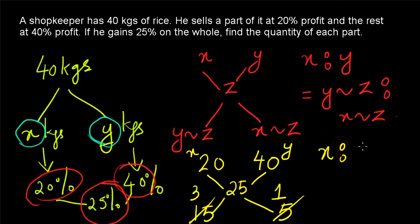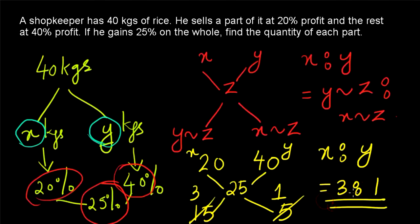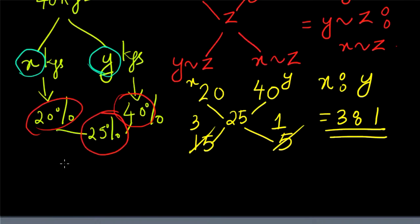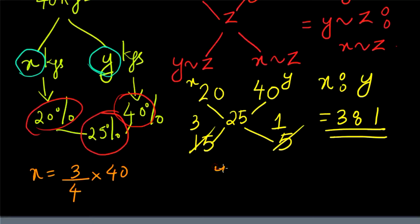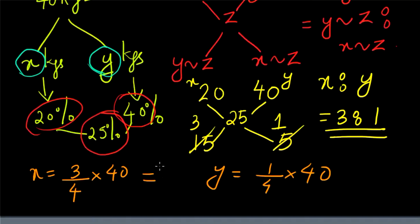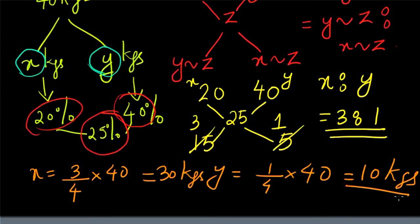X to Y in our question is 3 to 1. That means 3 parts should be sold at 20% profit and 1 part at 40% profit. We have to find the quantity of each part. Therefore, the quantity of X is equal to 3/4 × 40 = 30 kilograms, and the quantity of Y is equal to 1/4 × 40 = 10 kilograms. That is our final answer.